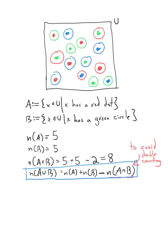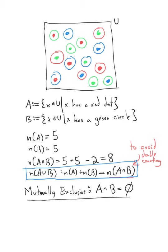One more quick note: this is the definition of two sets being mutually exclusive. Two sets are mutually exclusive if they share nothing in common. That means if you take the intersection of them, there's nothing in there — it's just the empty set. So if you're in A, you know you're not in B. It's impossible to be in both if those sets are mutually exclusive. This will come up when you learn about statistics and probability — it's a very important concept then.